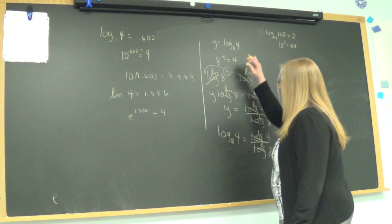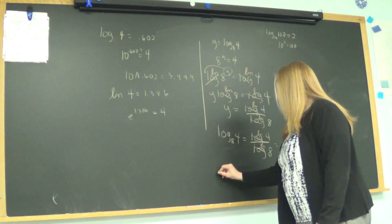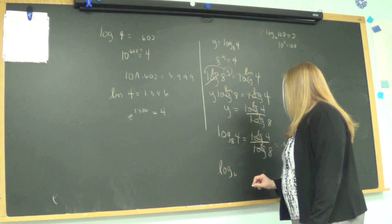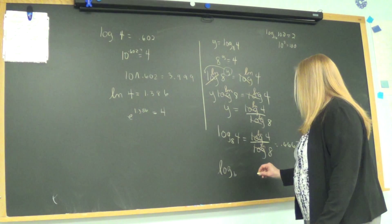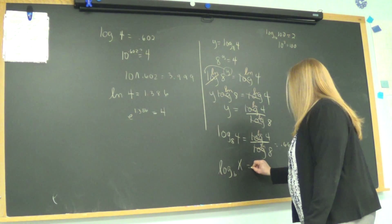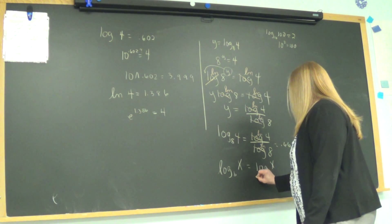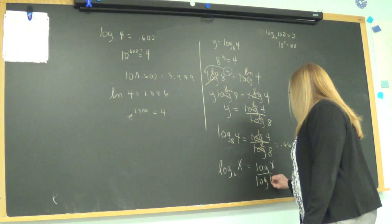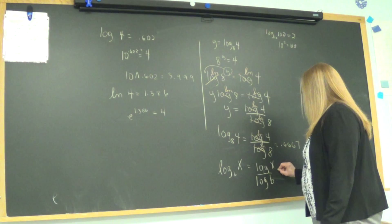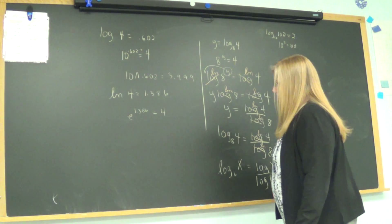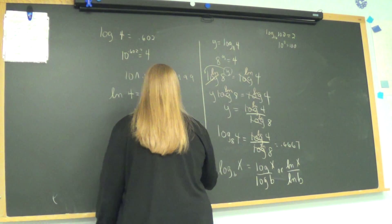So here's a formula. This is just one example. It does work in all cases. Log to the base B of some number, we'll say x, equals log of x over log of B, or LN of x over LN of B.